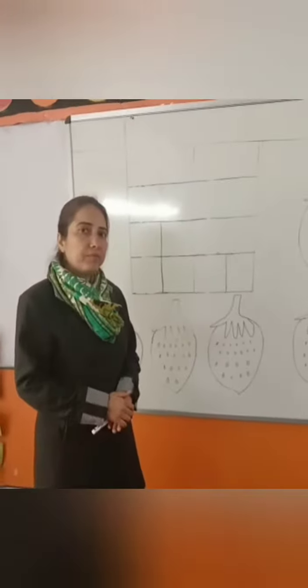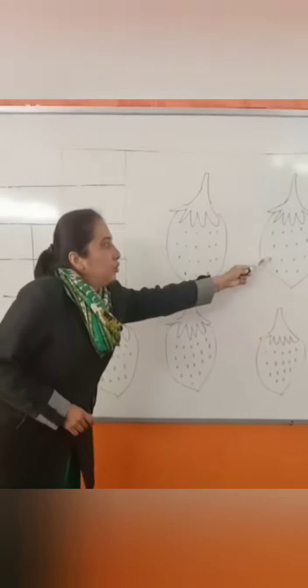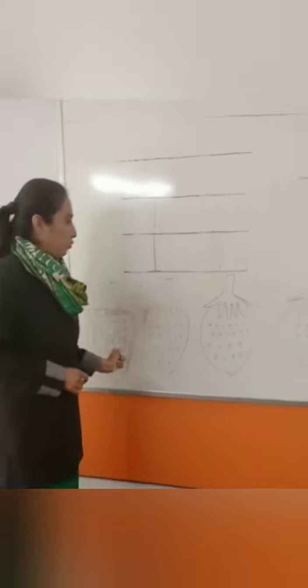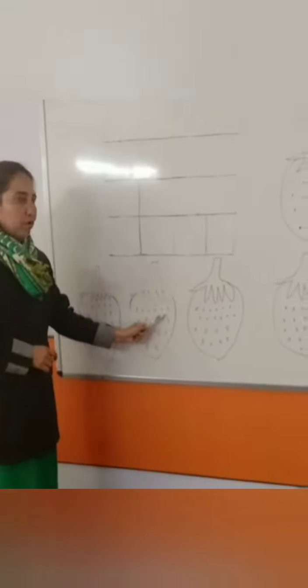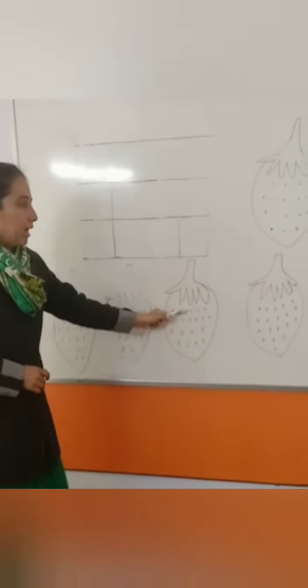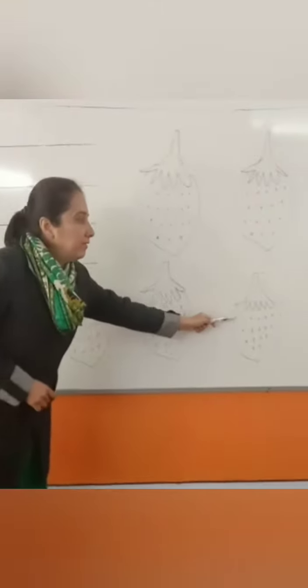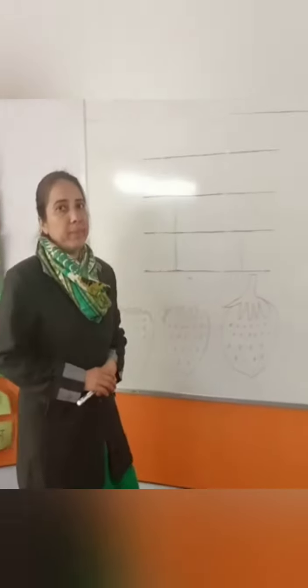Let's count strawberries. One, two, three, four, five, six, and seven. Seven strawberries.